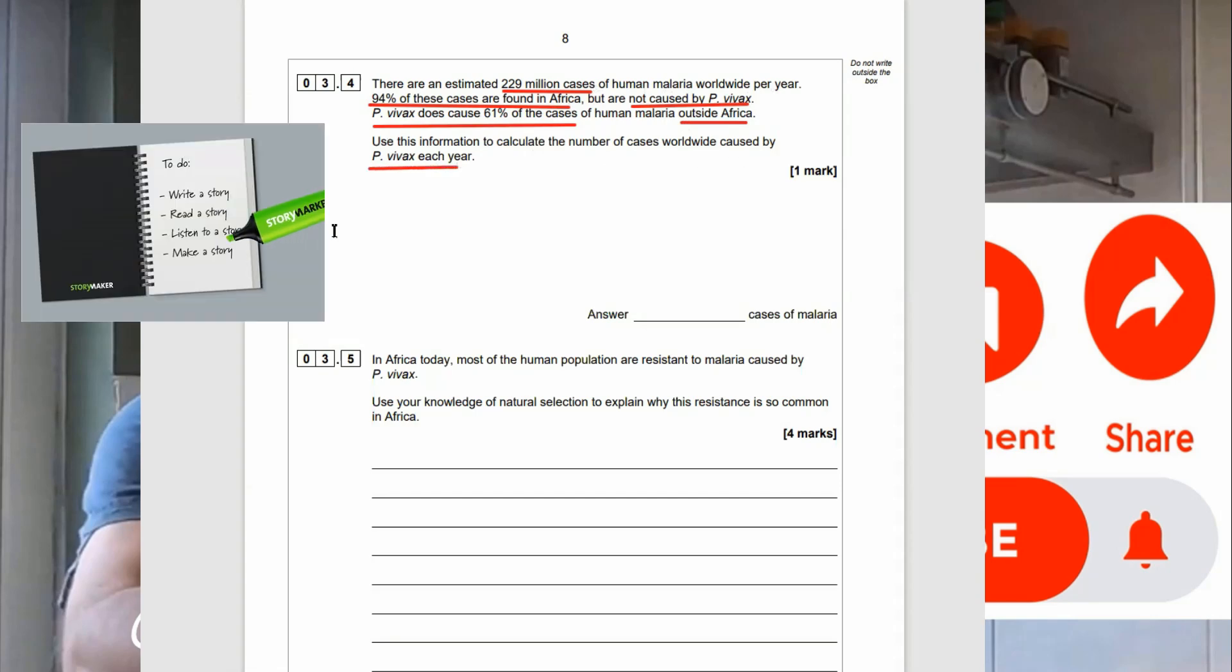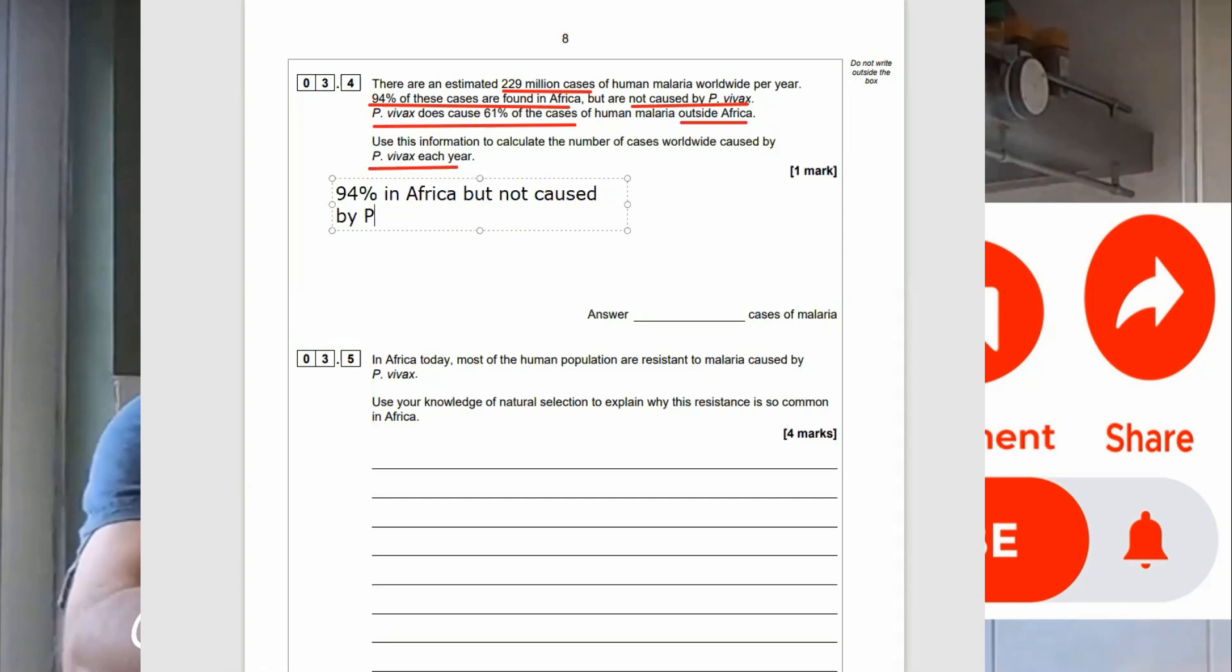You can see I'm underlining key points. You can use a highlighter if you like. It's just good exam practice to get in the habit of highlighting, circling key information. That way, when you're in an exam, it may stop you from missing something really important. Even if, when you first start doing it, you highlight loads of useless information, at least it helps.